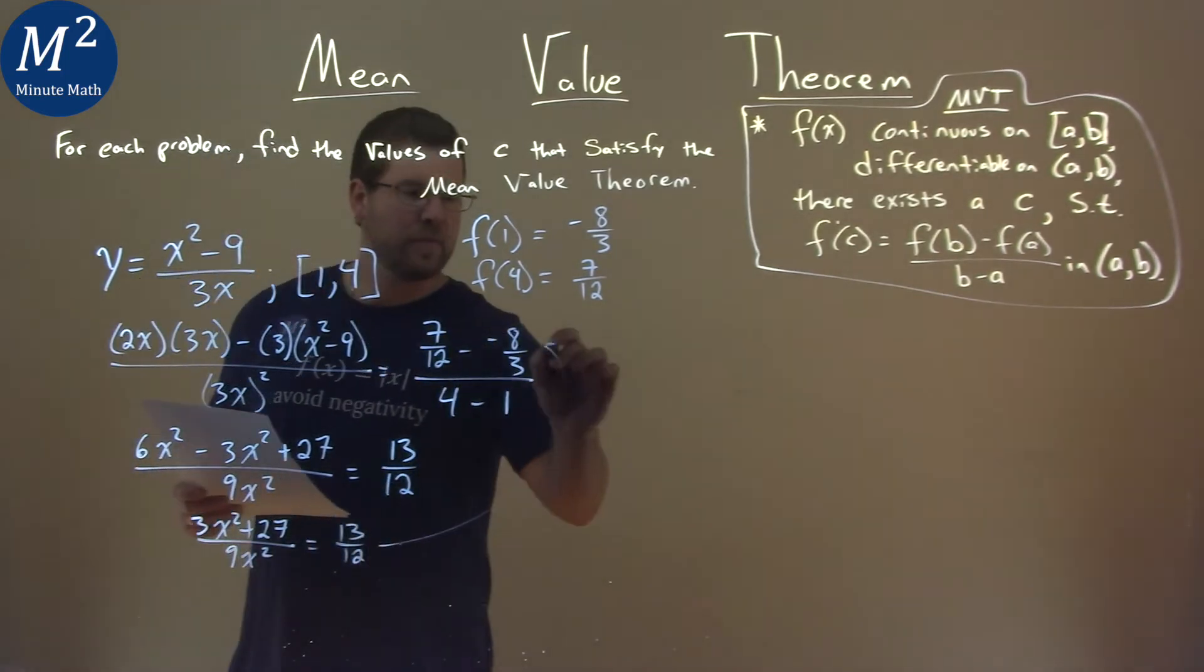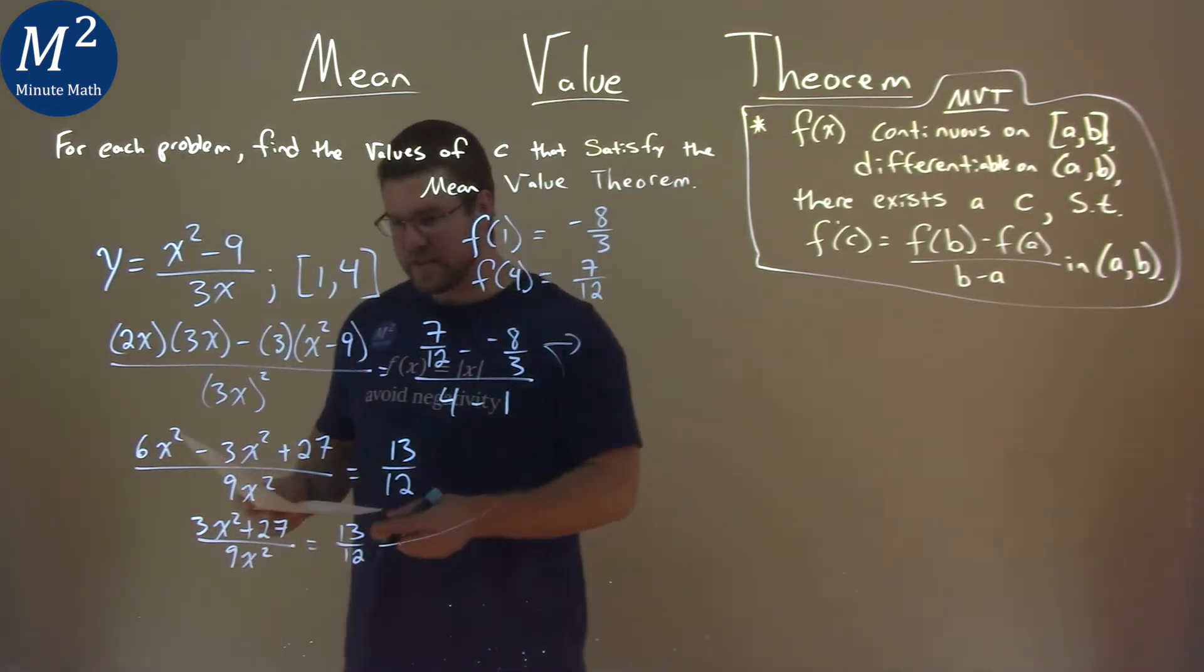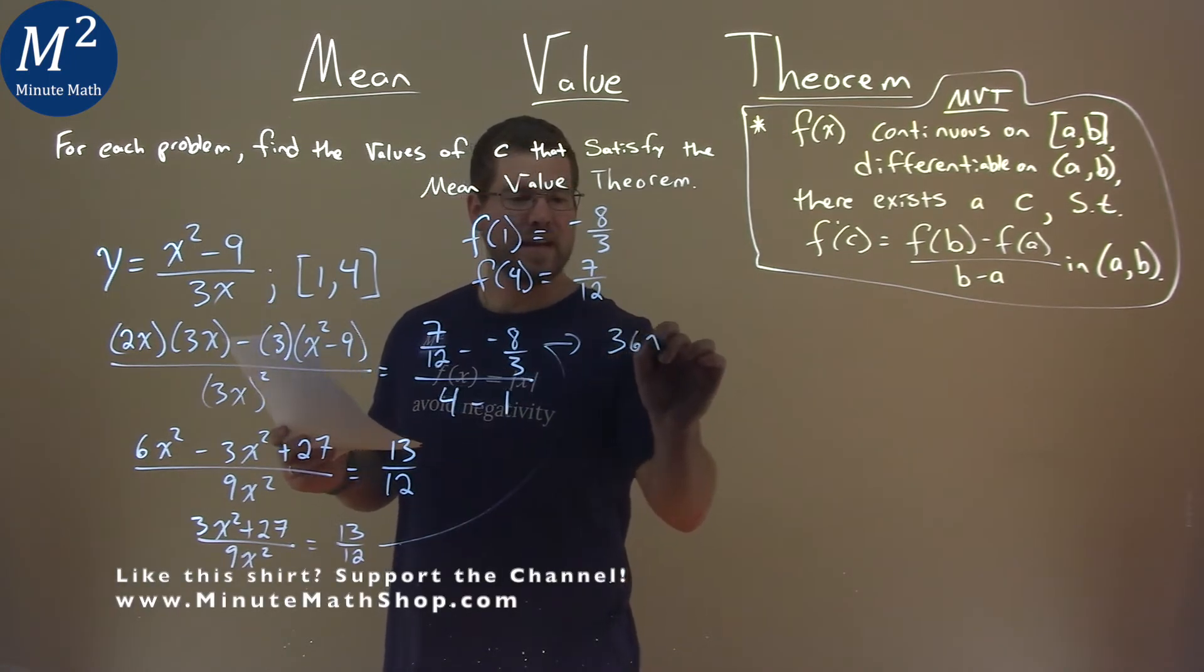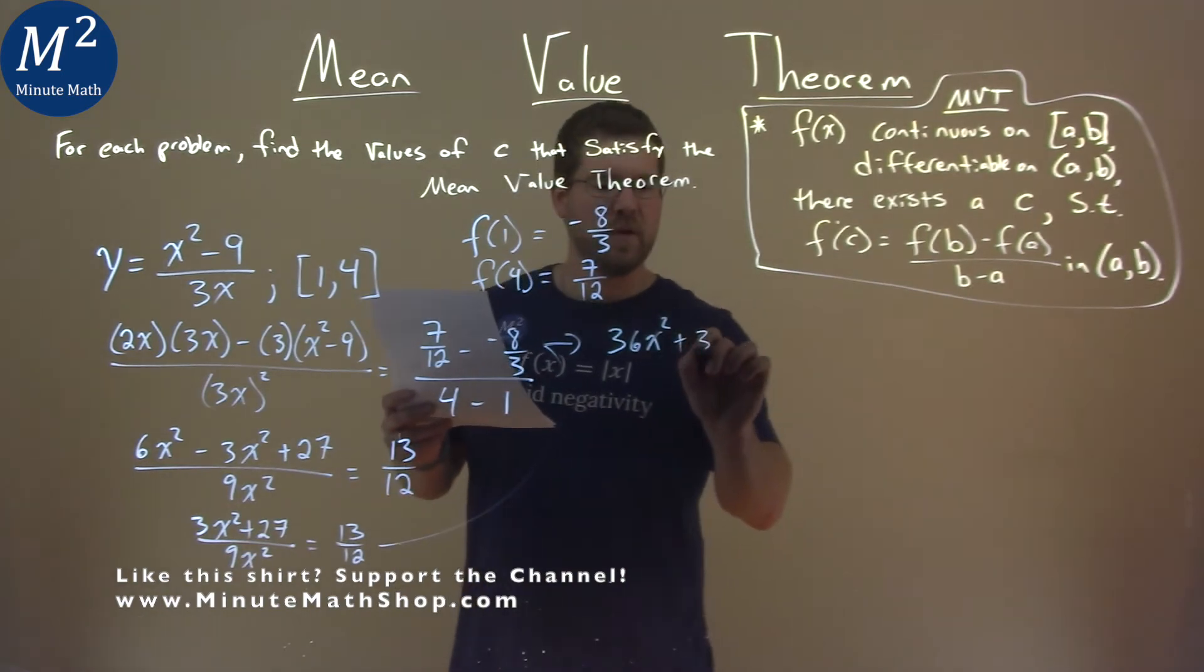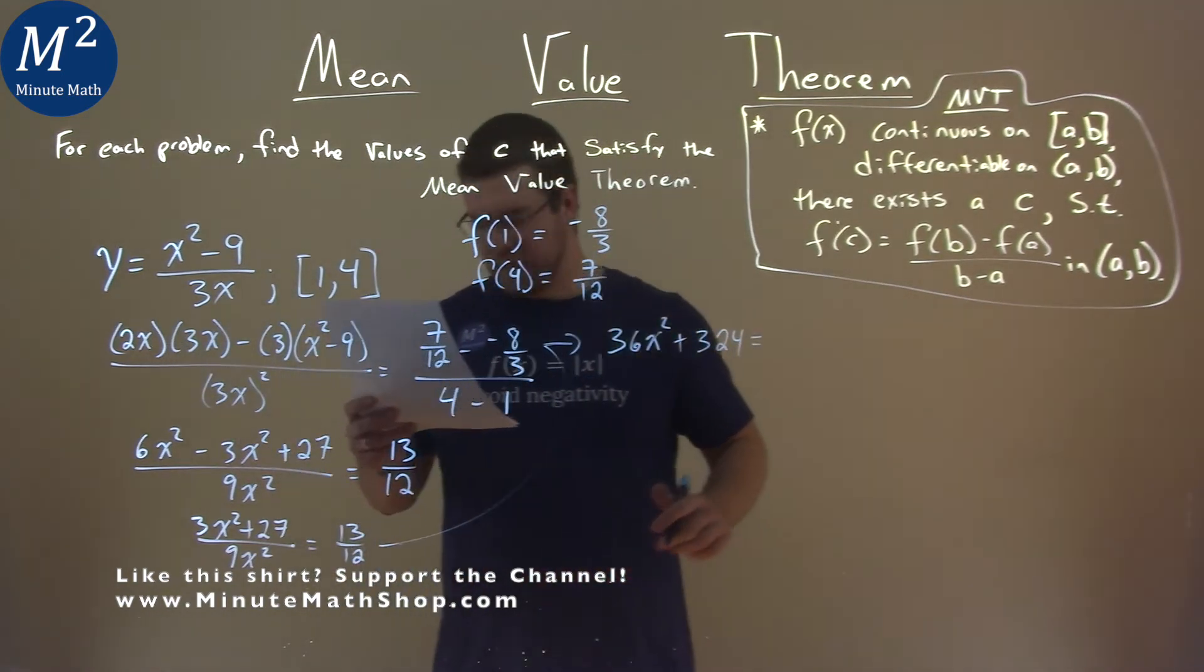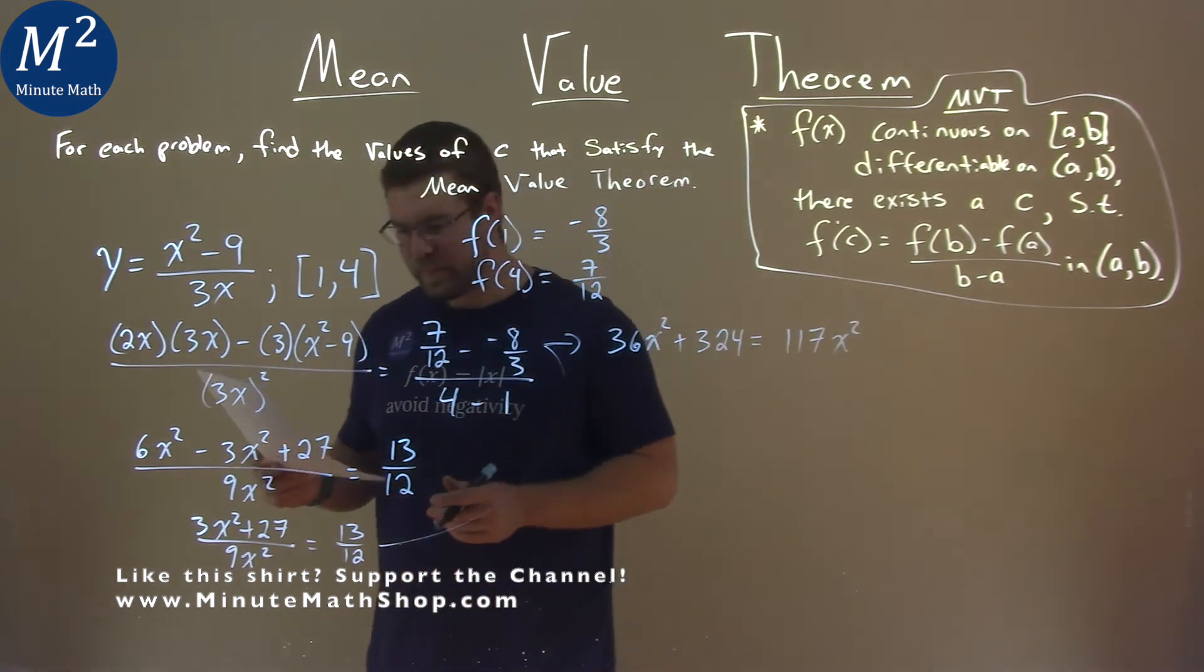So now at this point, I'm going to cross multiply. 12 times 3x squared plus 27. So 12 times 3x squared is 36x squared. And 12 times 27 is 324. 9x squared times 13 is 117x squared.